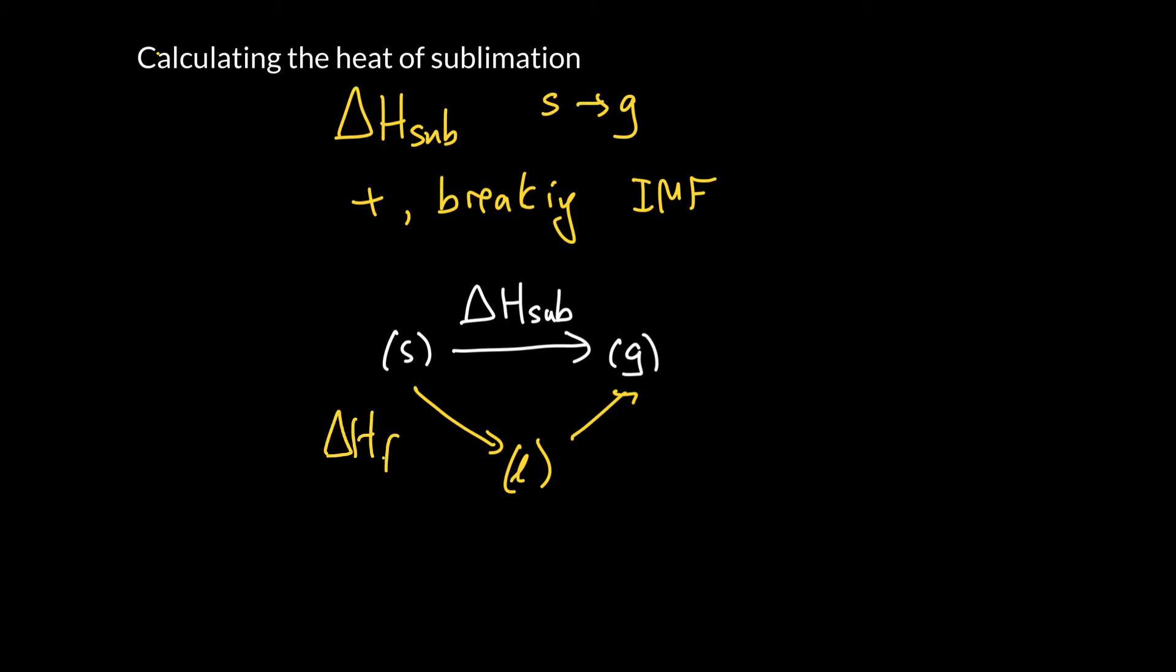So if we have, say, delta H of fusion for ice and we have delta H of vaporization for liquid water, we can take that path there and we can say that would be exactly the same change as if we went directly. So we can go ahead and calculate that.